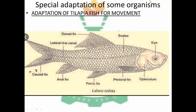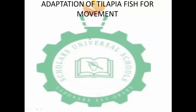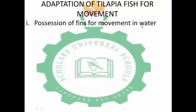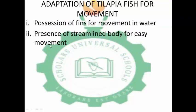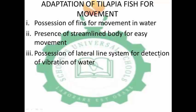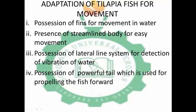Now let's look at special adaptations of some organisms: adaptation of the tilapia fish for movement. Let's look at how the tilapia fish adapts itself for movement. Possession of fins for movement in water. Possession of a streamlined body for easy movement. Possession of a lateral line for detection of vibration in water. Possession of a powerful tail which is used to propel the fish forward in the water.